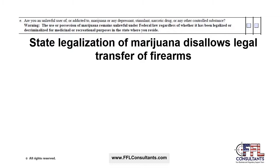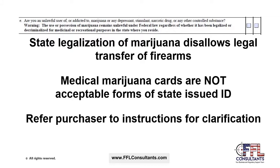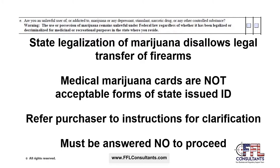Question 11E asks if the purchaser is an unlawful user of or addicted to marijuana or any other depressant, stimulant, narcotic drug, or controlled substance. This is controversial in states where cannabis has been legalized. State legalization of marijuana does not allow legal transfer of firearms and is not recognized by the federal government as a legalized controlled substance. Medical marijuana cards are not acceptable forms of state-issued ID for federal firearms transferees. This question must be answered no to proceed.